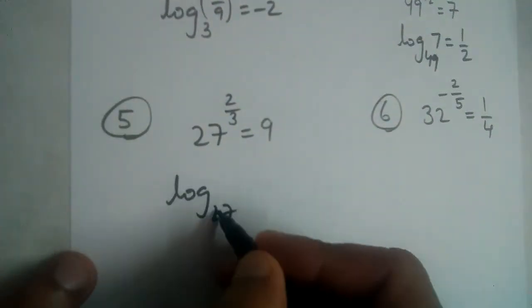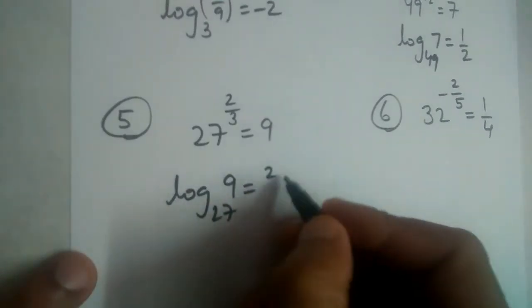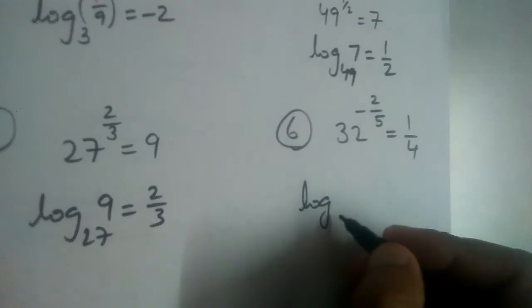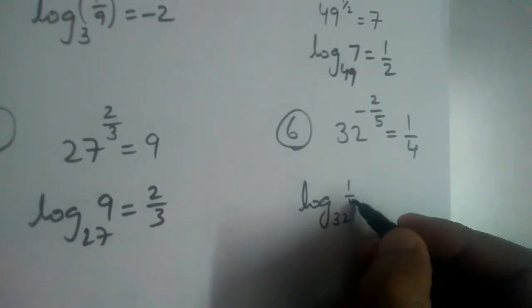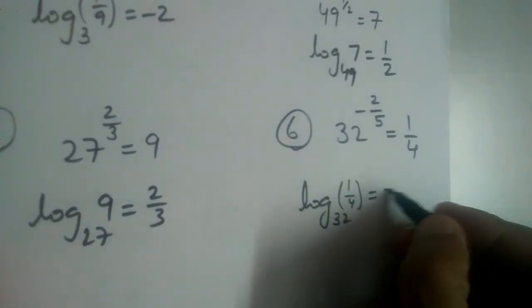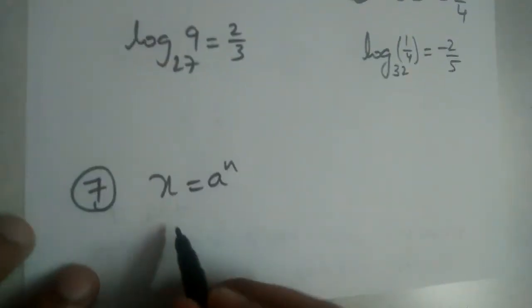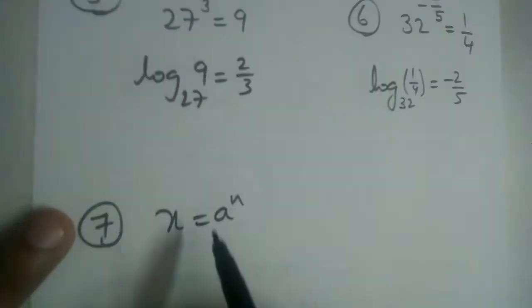Log base 27, 9 here, equal to 2 by 3. And log base 32, this is 1 by 4, equal to minus 2 by 5.